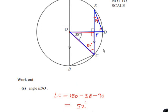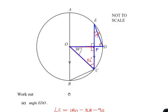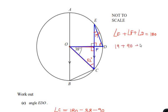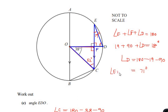We are supposed to find angle EDO. Since the angle made by line EF on OD is 90 degrees, and angle E is 19 degrees, we can find angle D using the angle sum property of the triangle: angle E plus angle F plus angle D equals 180 degrees. So 19 degrees plus 90 degrees plus angle D equals 180 degrees, giving angle D equals 180 minus 19 minus 90, which is 71 degrees. Therefore angle EDO is 71 degrees.